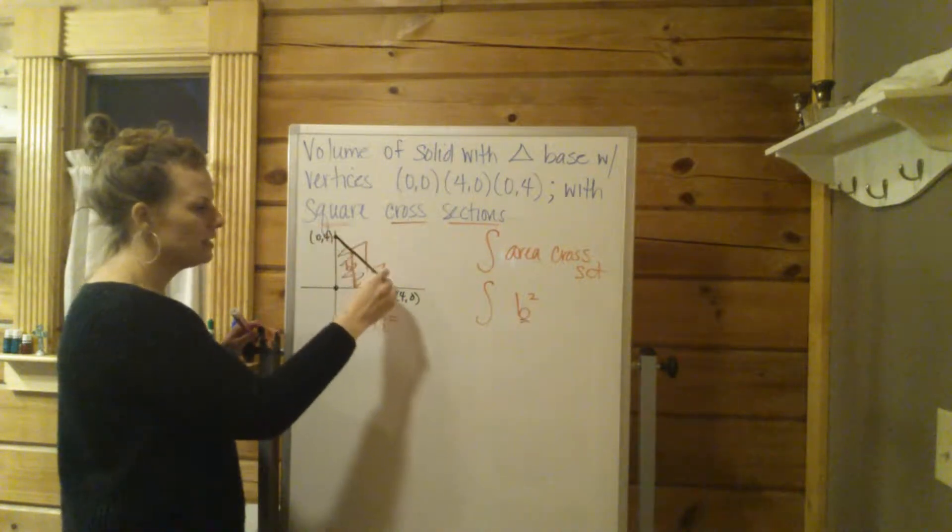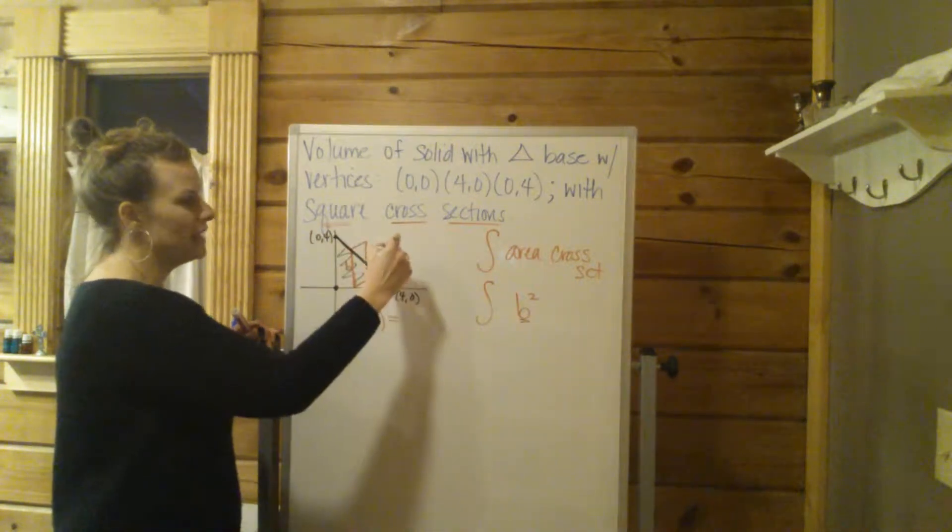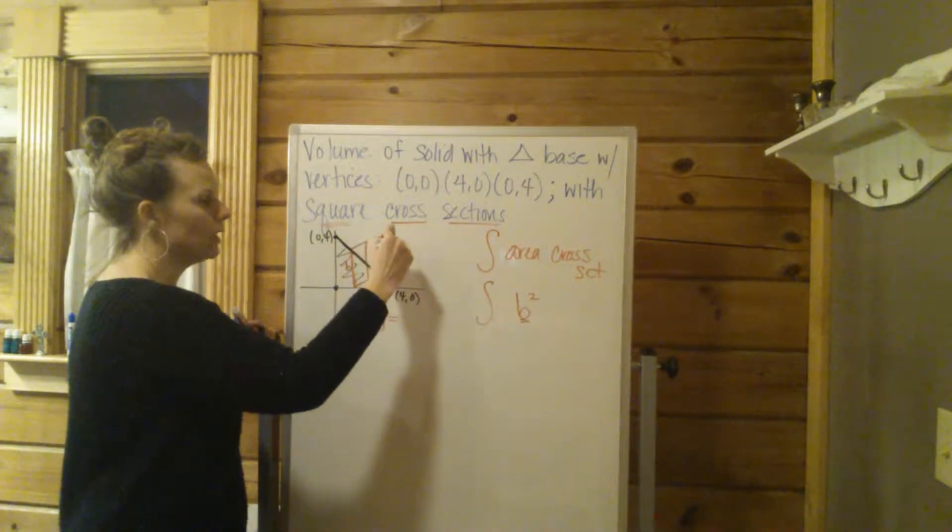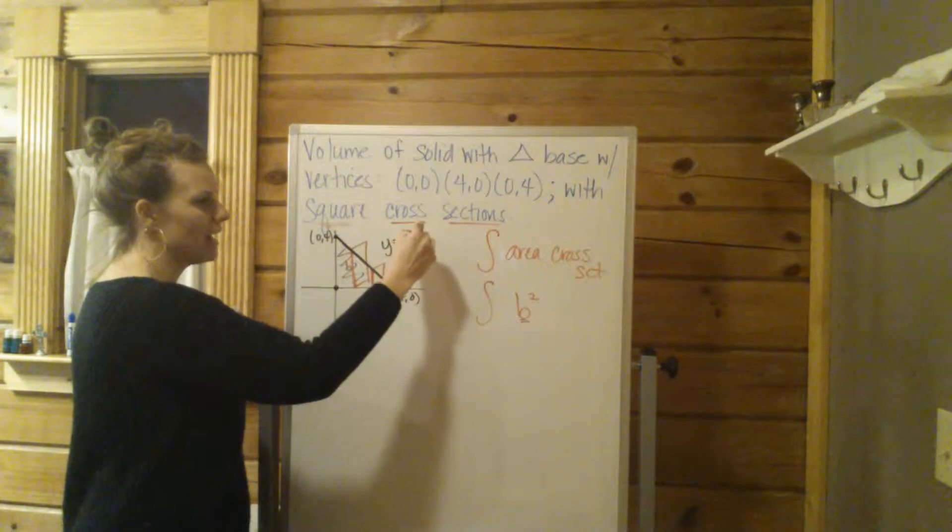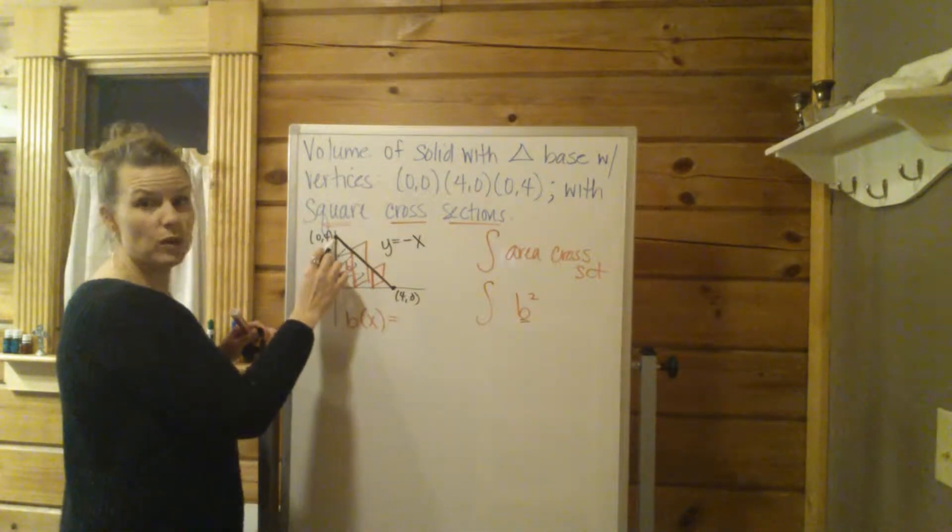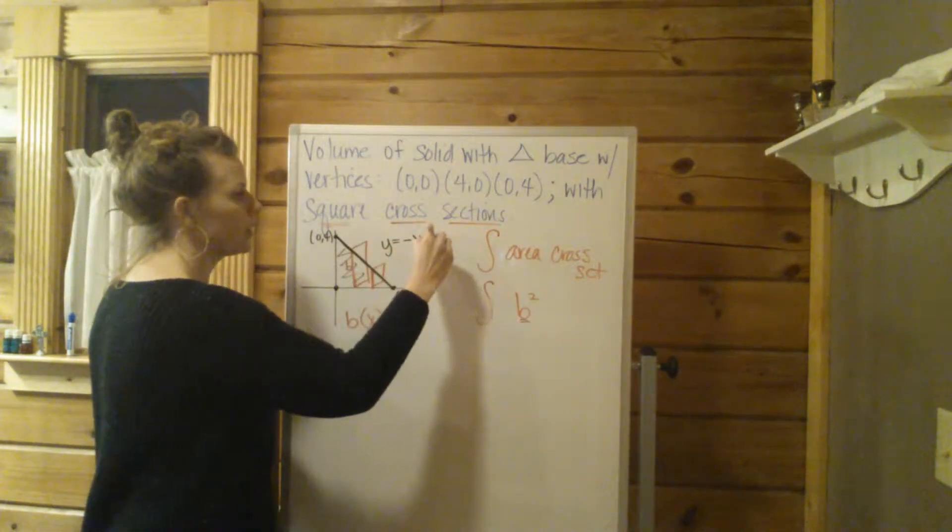The slope of this, like rise over run, will be negative 4. I'm sorry, negative 1. So the equation of this black line is going to be negative 1x plus b, which is the y-intercept, so plus 4.